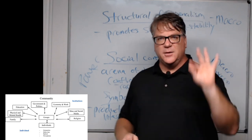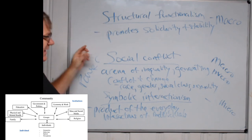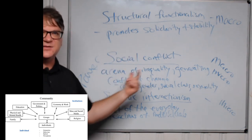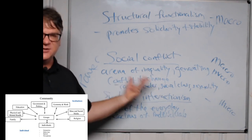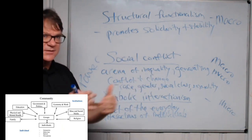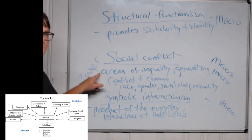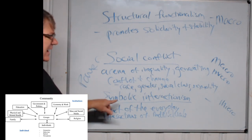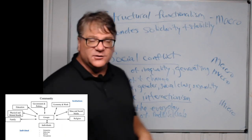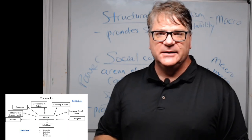So three major theoretical approaches: structural functionalism — a macro-level theory; the social conflict approach, which contains many theories related to race, sex, gender, ethnicity, social class, and sexuality, and can be macro or micro level depending on the phenomenon — with power being a really important part of that approach; and symbolic interactionism, a micro-level theory. That's it for this short video on the three major theoretical approaches in sociology. Thank you for listening and watching.